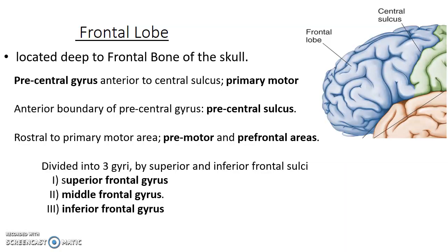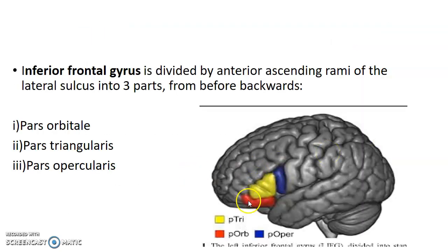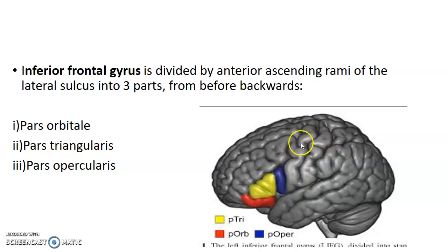The frontal lobe is located deep to the frontal bone. Anterior to the central sulcus is the precentral gyrus, which forms the primary motor area responsible for motor functions in the body. The anterior boundary of the precentral gyrus is the precentral sulcus. The remaining part of the frontal lobe is divided into superior, middle, and inferior frontal gyri. The inferior frontal gyrus is divided into three parts by two ascending rami: pars orbitalis, pars triangularis, and pars opercularis.